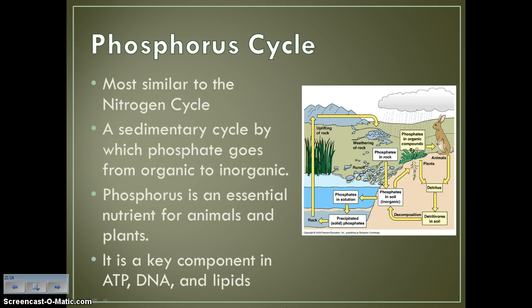Last up we have the phosphorus cycle. The phosphorus cycle is most similar to the nitrogen cycle — it's a sedimentary cycle where phosphates go from organic (living) to inorganic (non-living). Phosphorus is an essential nutrient for all living things because it's a key component in ATP (adenosine triphosphate), which we need for energy; it's a key component in DNA, where sugars and phosphates make up the backbone; and it's a key component in lipids.